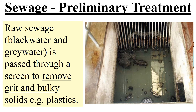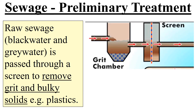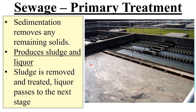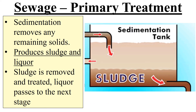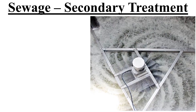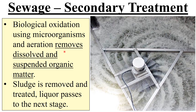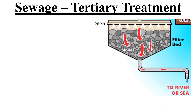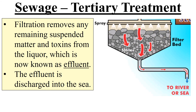Here they are again. Preliminary treatment: removing your grit and solids. Primary: sedimentation — you allow the sludge to settle and you have the liquor. The liquor moves on. Then you bring in your microorganisms — this is your biological oxidation, so they remove that organic matter that's left. And then finally, you have this last filtration stage of the liquor, and after it's filtered it becomes effluent and it's safe to send away to rivers or the sea.